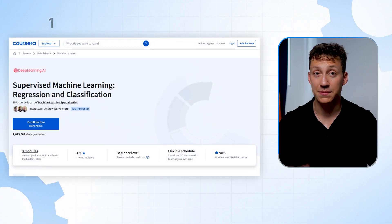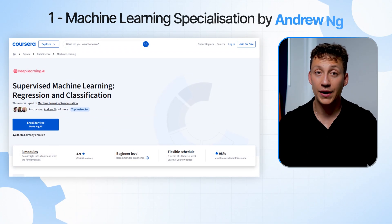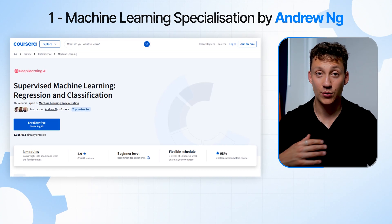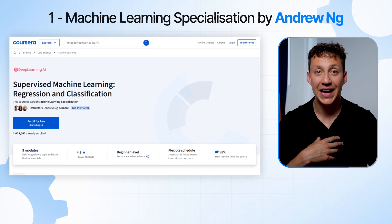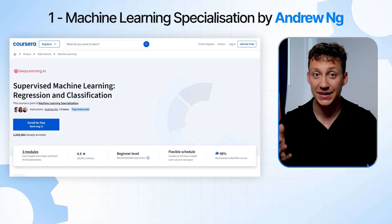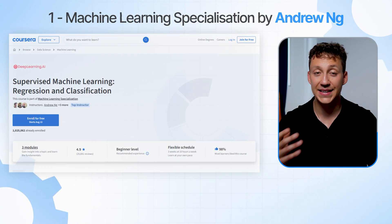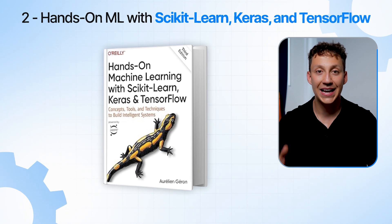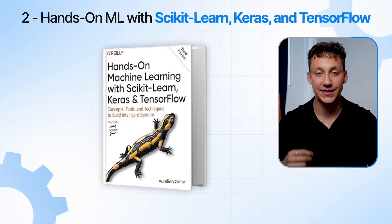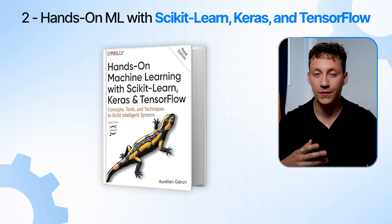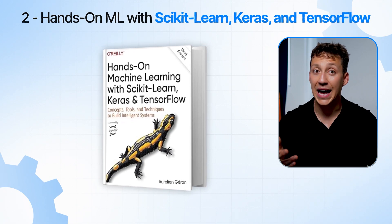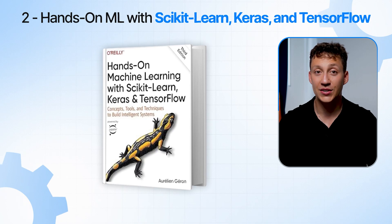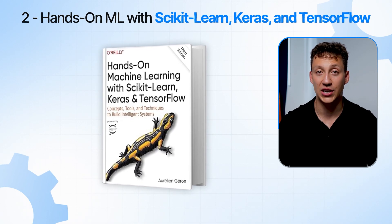The first ML course I recommend is the Machine Learning Specialization by Andrew Ng. You can honestly get away with just doing this course — it's that good. It's the one I took when I first got into the industry and probably the best course out there on machine learning. The second resource is probably the best textbook on machine learning: Hands-On Machine Learning with Scikit-Learn, Keras and TensorFlow. Like the Andrew Ng course, you can get away with just using this textbook to learn everything you need.